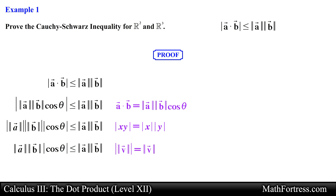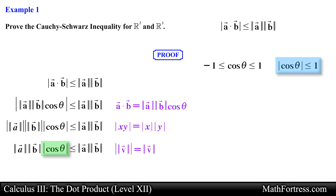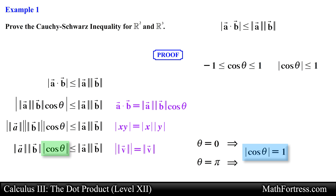Now let's take a look at the absolute value of cosine of theta. Recall that the range of cosine of theta is between negative 1 and positive 1. In other words, the absolute value of cosine of theta is less than or equal to 1. When theta equals 0 or pi, the absolute value of cosine of theta equals 1.